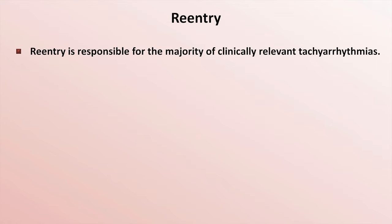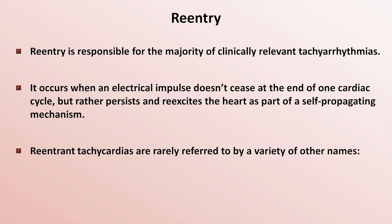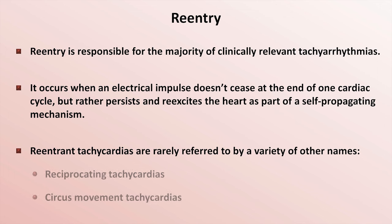The next general mechanism of tachyarrhythmia is re-entry. Re-entry is responsible for the majority of clinically relevant tachyarrhythmias. It occurs when an electrical impulse doesn't cease at the end of one cardiac cycle, but rather persists and re-excites the heart as part of a self-propagating mechanism. Re-entrant tachycardias are rarely referred to by a variety of other names, including but not limited to reciprocating tachycardias and circus movement tachycardias. For the most part, these alternative terms are archaic and fell from popularity several decades ago.